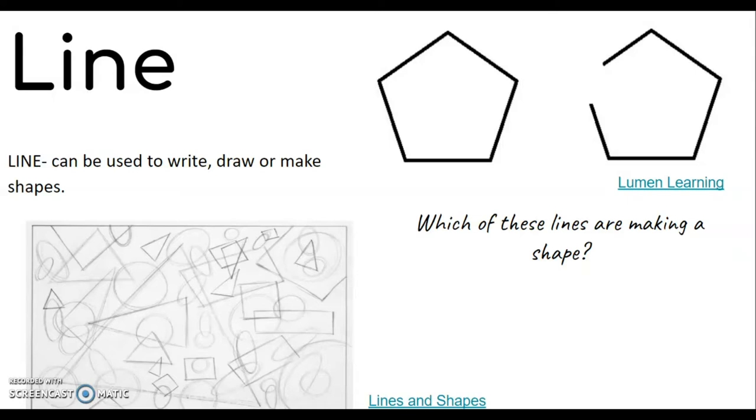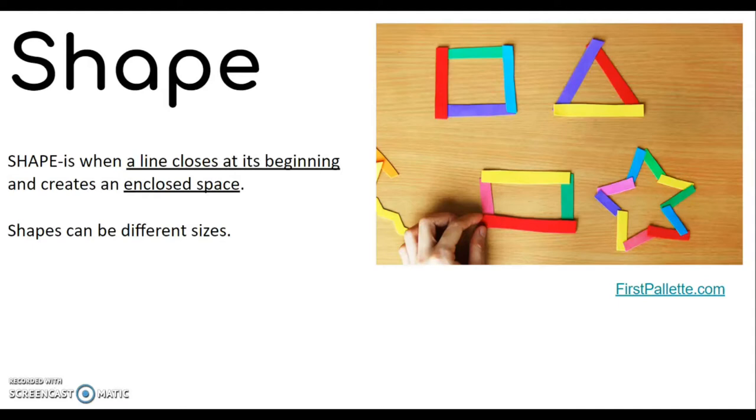The one on the left goes all the way around and closes on itself. The one on the right leaves a big open space on the left-hand side. That one is not actually a shape because the line did not close at its beginning. A shape is when a line closes at its beginning and creates an enclosed space.